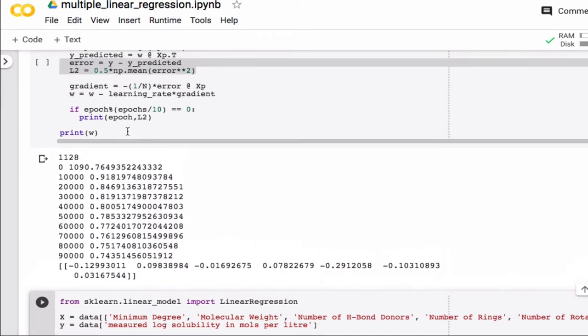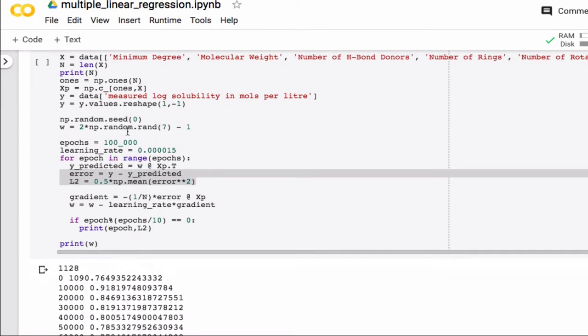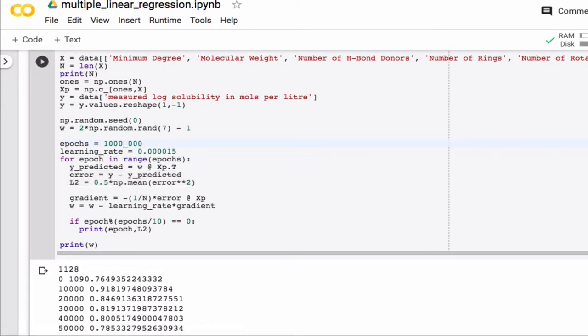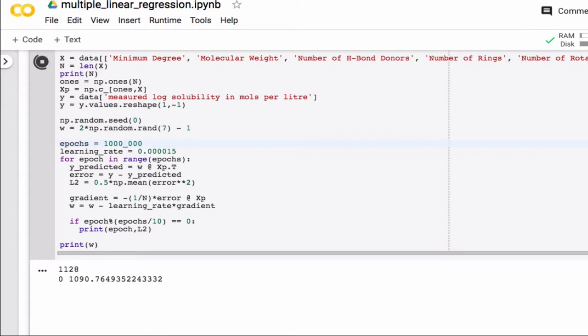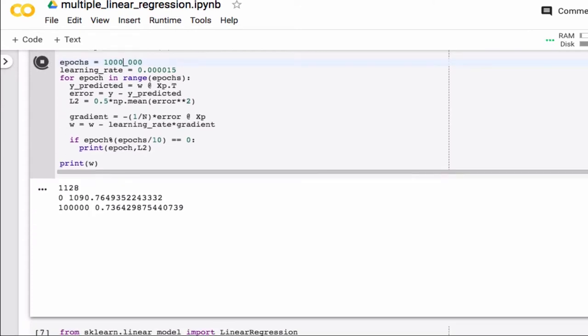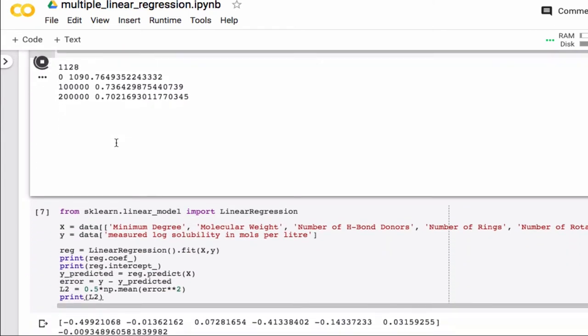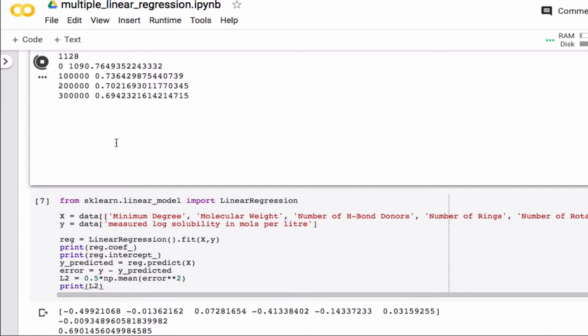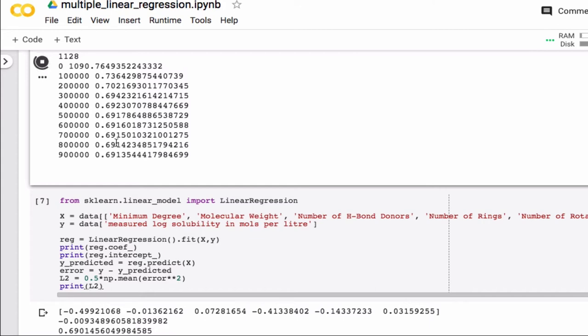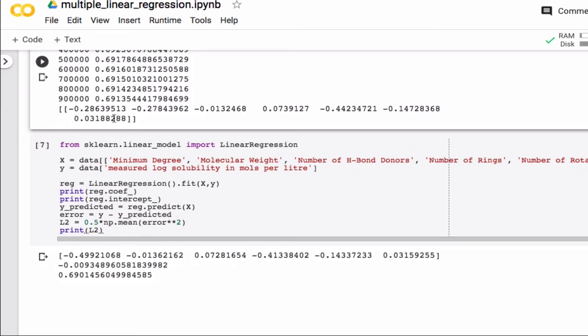Let's see if we can get there by increasing the epochs. So now we're running a million. Go Python! Okay, so we're shooting for 0.69. Oh, that looks promising. Now we're shooting for 0.690. Are we going to get there? No, it's... well, we're certainly going to get closer. Okay, so you can see now that the values are actually starting to approach each other for the weights.